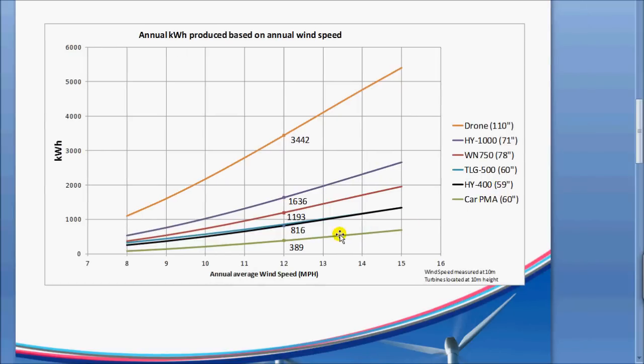And then we have our car PMA on the bottom, followed by the HY400, the TLG, the Windy Nation, the Windmax 1000, and then the drone up on top. And then I have the numbers from the table in here for 12 miles an hour just as a reference.